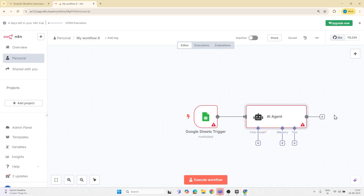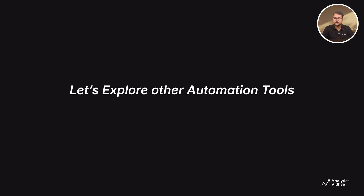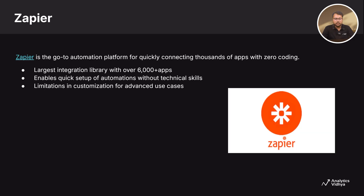Let's take a step back and look at some other automation tools. Starting with Make and Zapier — both are well-known names in the automation space. Make is a very visual drag-and-drop automation platform; it's user-friendly and powerful, especially for teams with mixed technical skills. You don't need to write code, but you can build some pretty complex workflows. If you want speed and app coverage without much setup, Zapier might be more your style — it's built for quick no-code automation, connects over 6000 apps, but is not very flexible when it comes to custom logic.